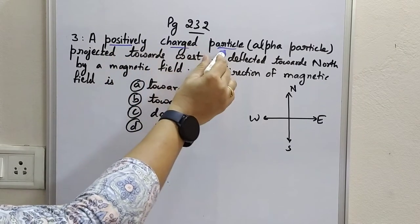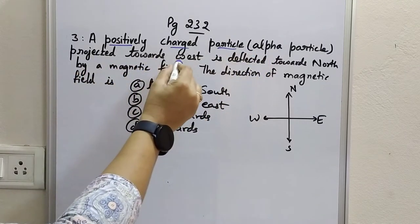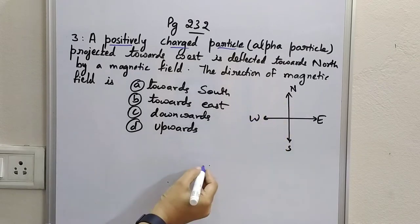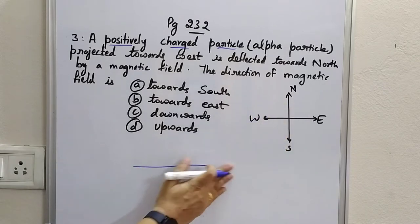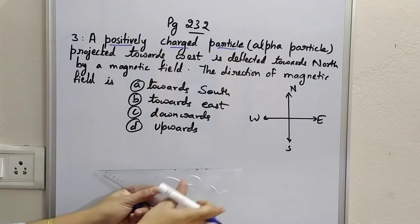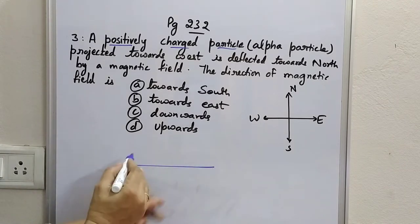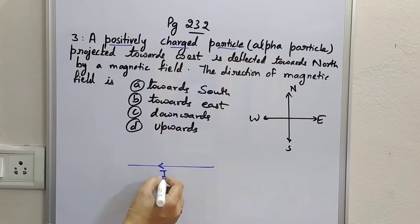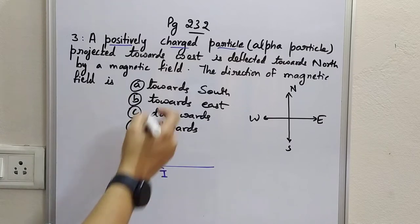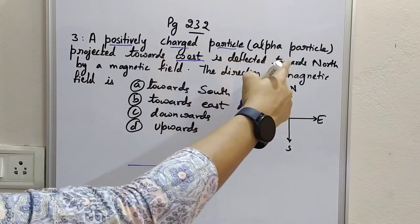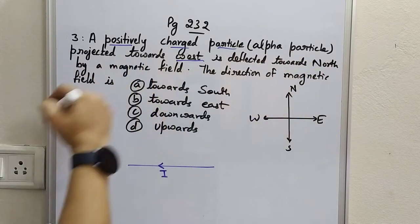The positively charged particle — the alpha particle — is projected towards west. So the direction of the positively charged particle is towards west, and we take that as the direction of current, which is projected towards west. I have drawn that.